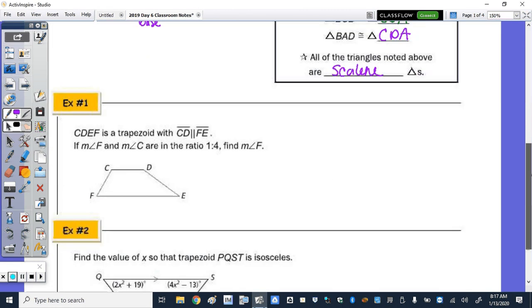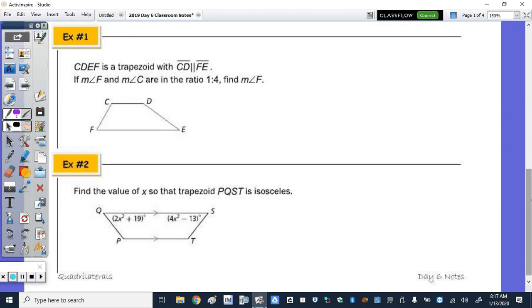Let's go down to example number one. So CDEF is a trapezoid with CD parallel to FE, so that's their way of telling you that those two are the bases. Measure of angle F and the measure of angle C are in the ratio 1 to 4. So F is the one, C is the four. One X to four X for ratios.